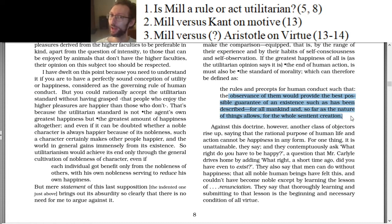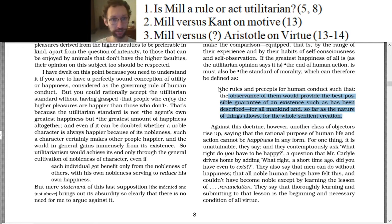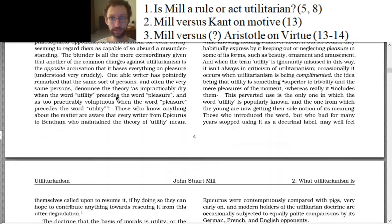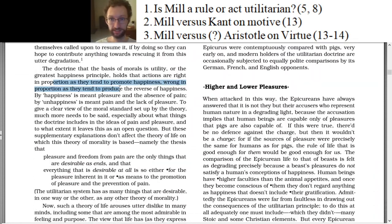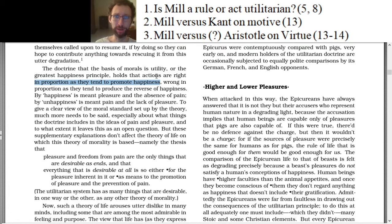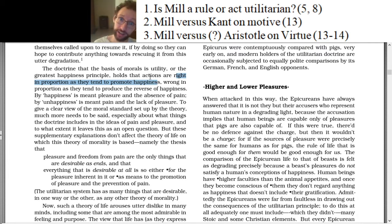So you can kind of read Mill as either. He's got stuff I leaned on to emphasize the rule thing — he does talk about rules and precepts and he does talk about tendencies, what tends to promote. But the tendency stuff — you might think he's just talking loosely here. 'Something in proportion as it tends to promote happiness' is just a complicated John Stuart Mill way of saying something's right to the extent it promotes happiness. So you could read this in the rule kind of way or the act kind of way.